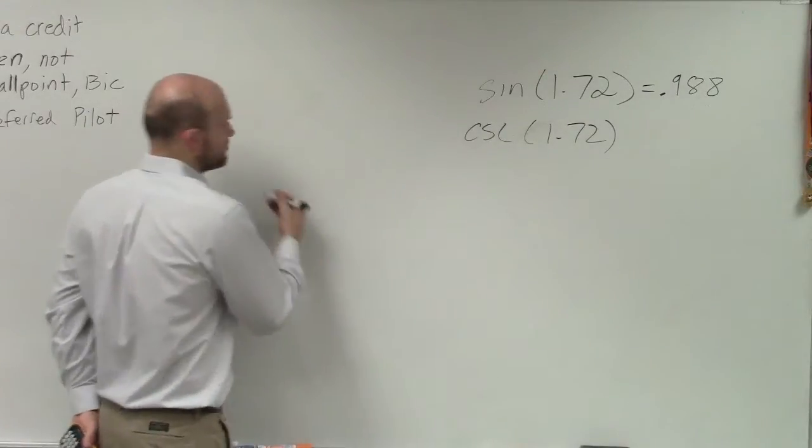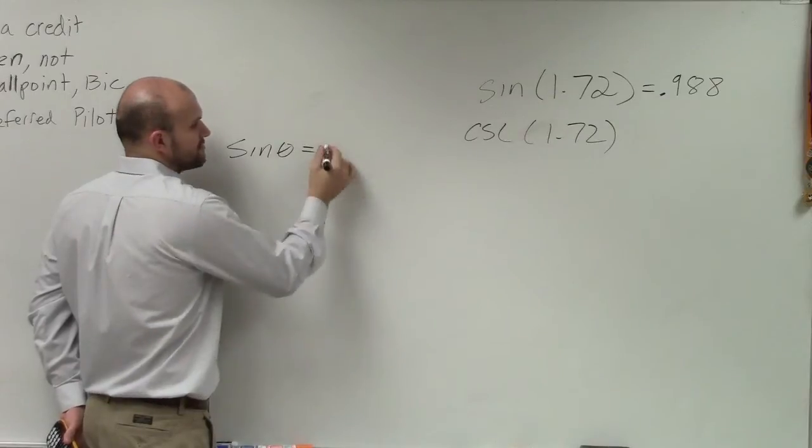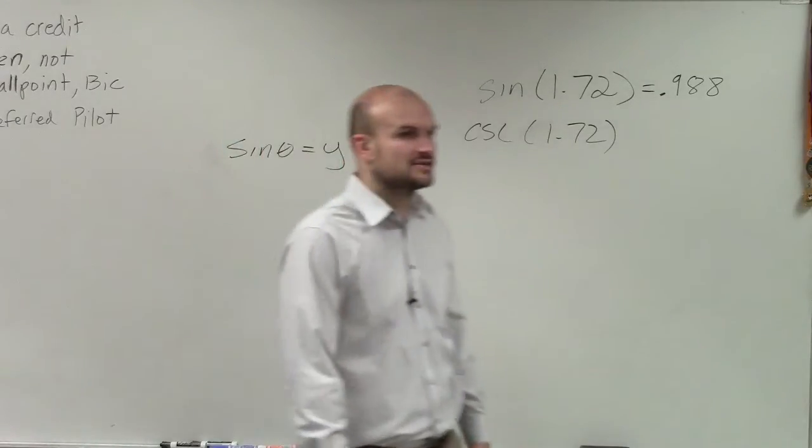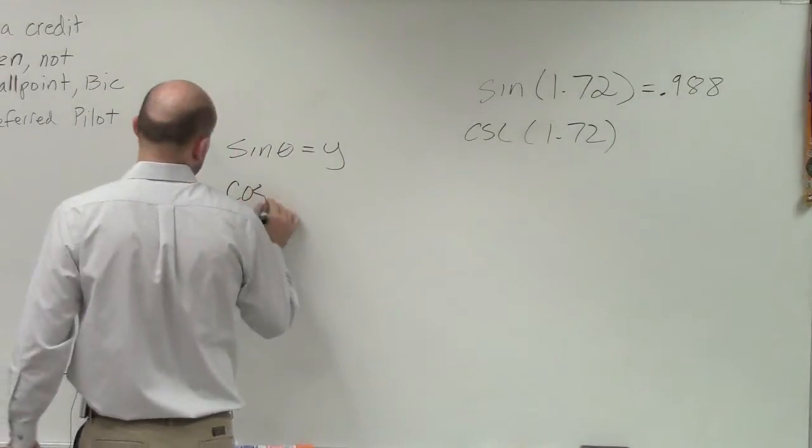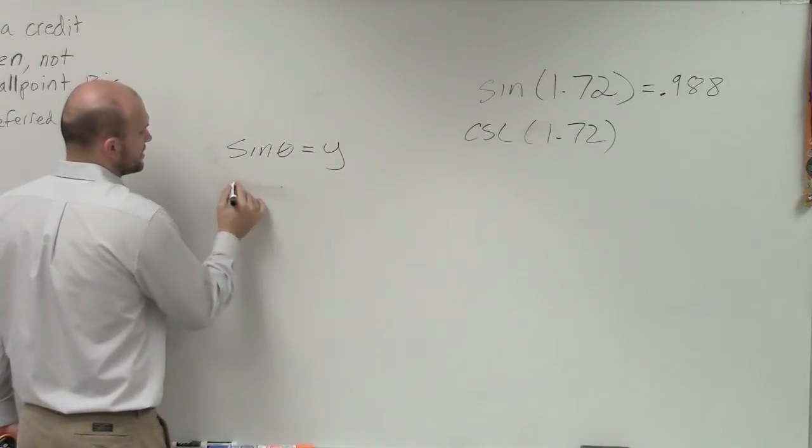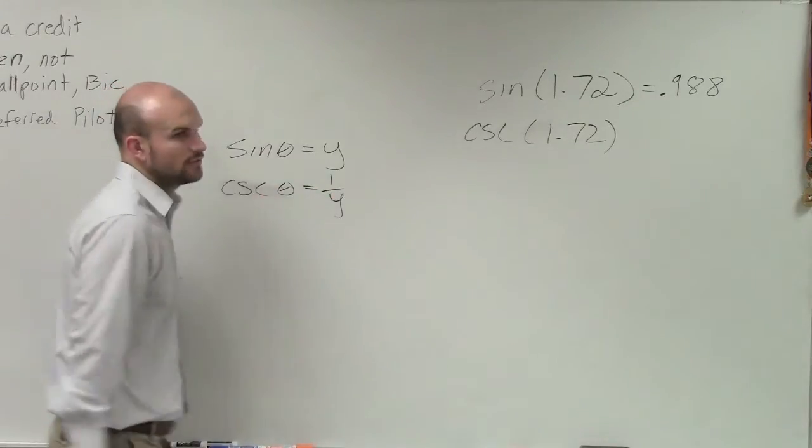Well, remember, when we talked about the points on the unit circle, we said sine of an angle is represented by that y-coordinate of the intersection on the unit circle. Then, when we talked about the cosecant of that angle, we represented that as 1 over y.